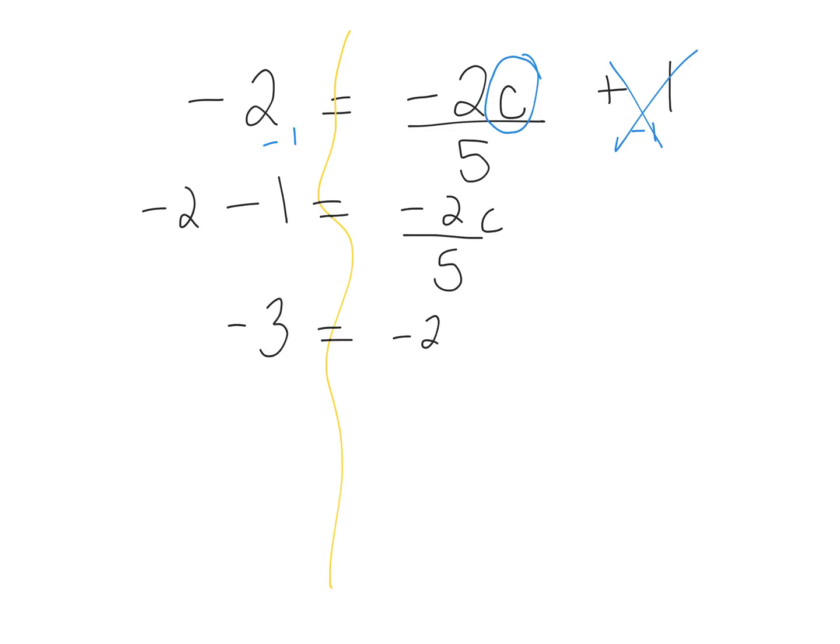And now I have negative 2 divided by 5c. What operation do I want to undo now? Which one do I want to get rid of? What's the opposite of dividing by 5? So the other side of the equation has to be multiplied by 5. What's positive 5 times negative 3? Negative 15. So negative 15 equals what? Negative 10.